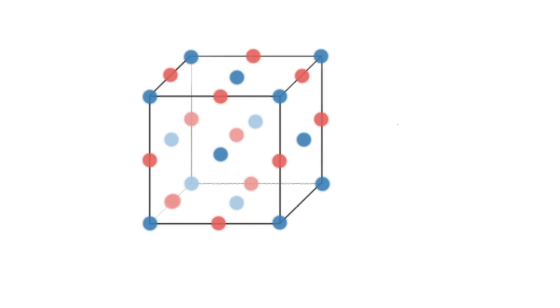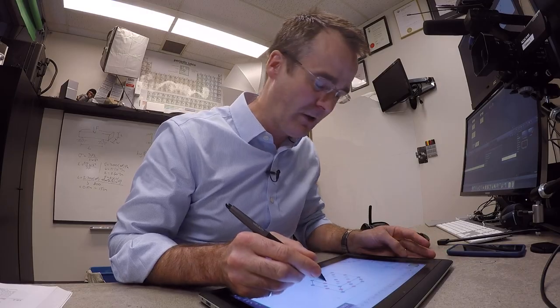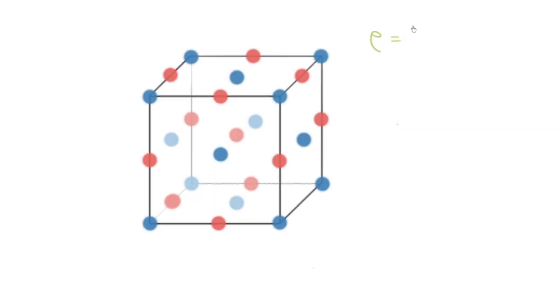Okay, and so now if we want to calculate the density, well, we need to do is add up the number of atoms of each type, how much they weigh, and divide by the volume, just like we did for a metal.